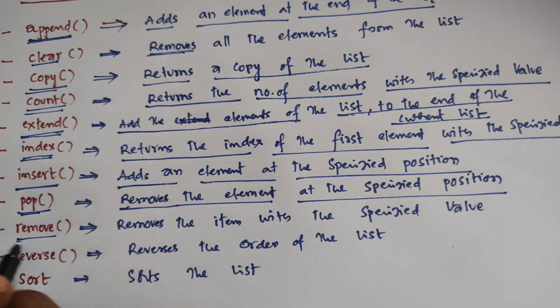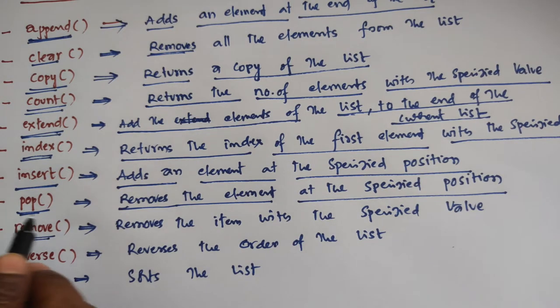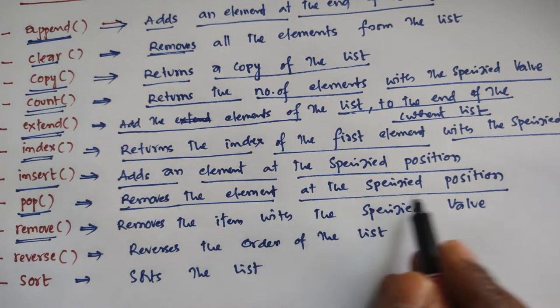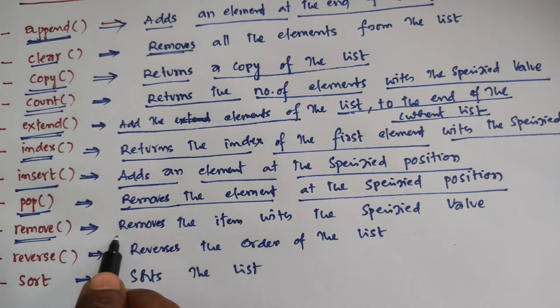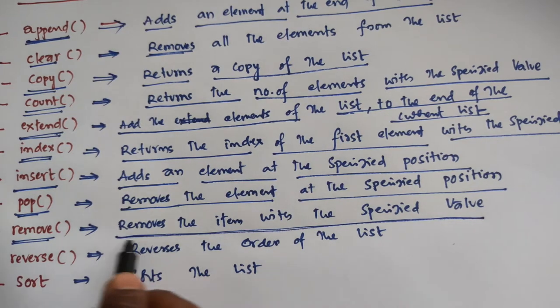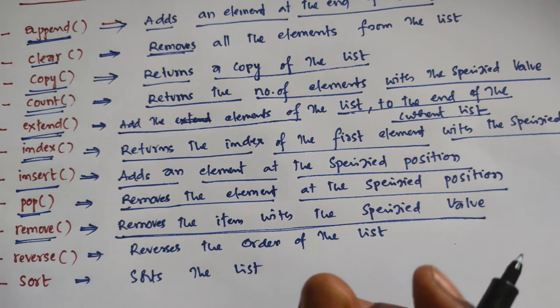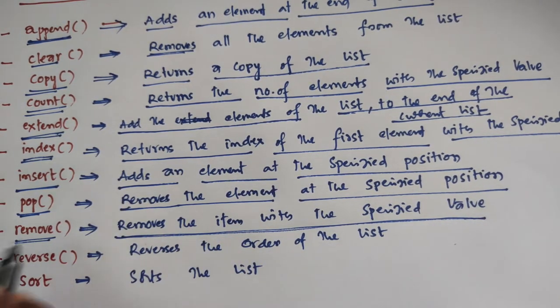Next, remove. The difference between pop and remove: pop removes the element at the specified position, while remove removes the item with the specified value. For example, if you have a particular item, you can remove it by its value.